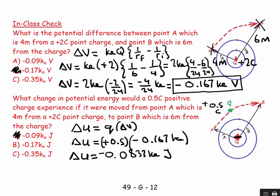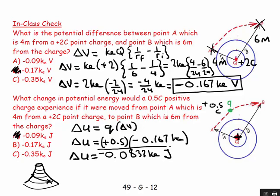Does this make sense? The positive source charge is like a volcano — a mountain. Going from A to B is going from a point relatively high on it to a point lower down, so the change in contour is negative, which is what we got. Placing a positive charge there is like a boulder rolling downhill: it starts with high potential energy and ends with low, so the negative change in potential energy makes sense.